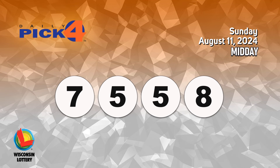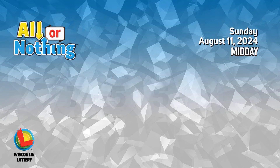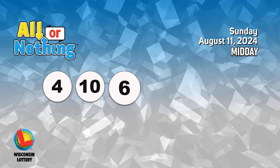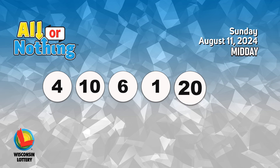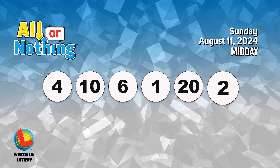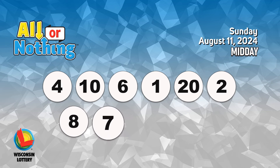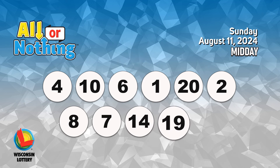The All or Nothing numbers are four, ten, six, one, twenty, two, eight, seven, fourteen, nineteen, eighteen.